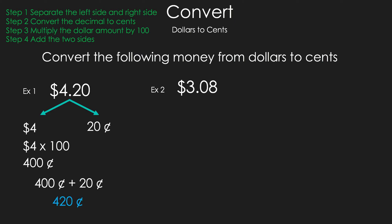Take a look at example 2. Whenever you're dealing with money, if you see a zero, it can be tricky. You have to pay attention on what you're doing. Now we're going to separate and change the decimal to cents. We have $3 and then we also have 8 cents. Now I'm going to multiply by 100 to give me 300 cents. And now we're going to add them and we get 308 cents as your answer.